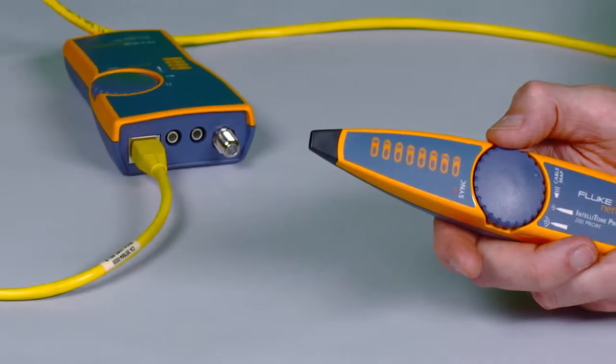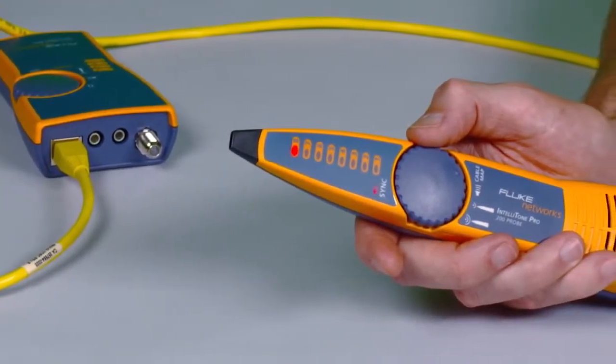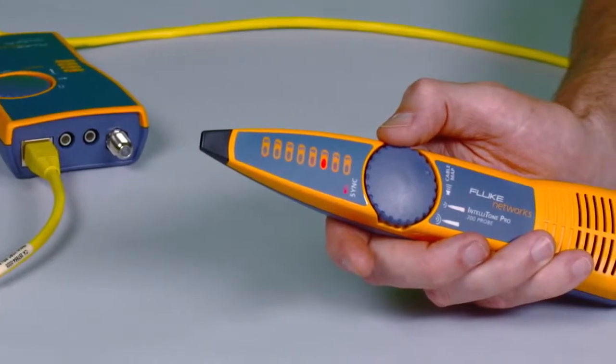Validate wire maps in a flash, finding the most common wiring faults on twisted pair cabling, such as shorts, opens, and crossed pairs.